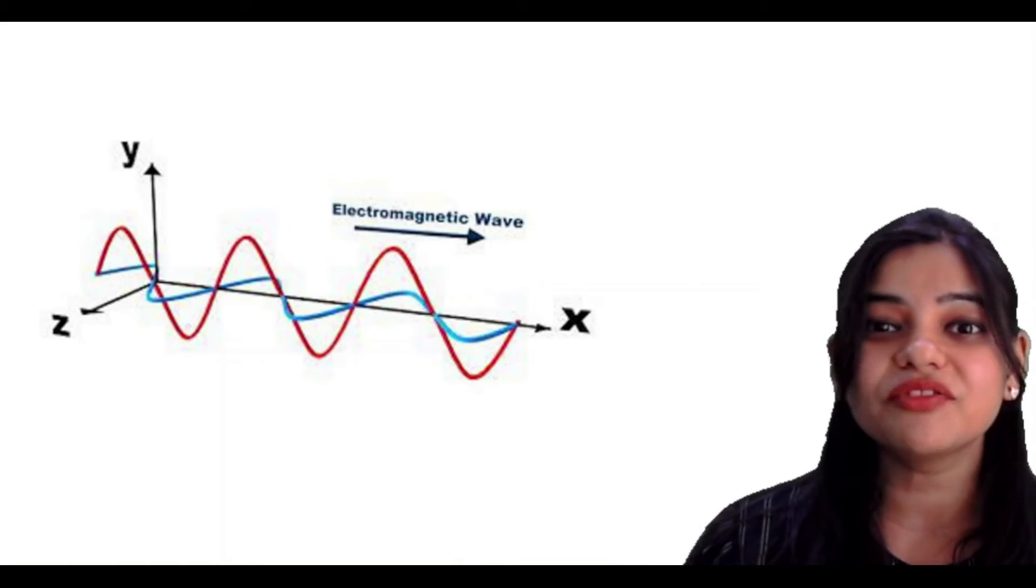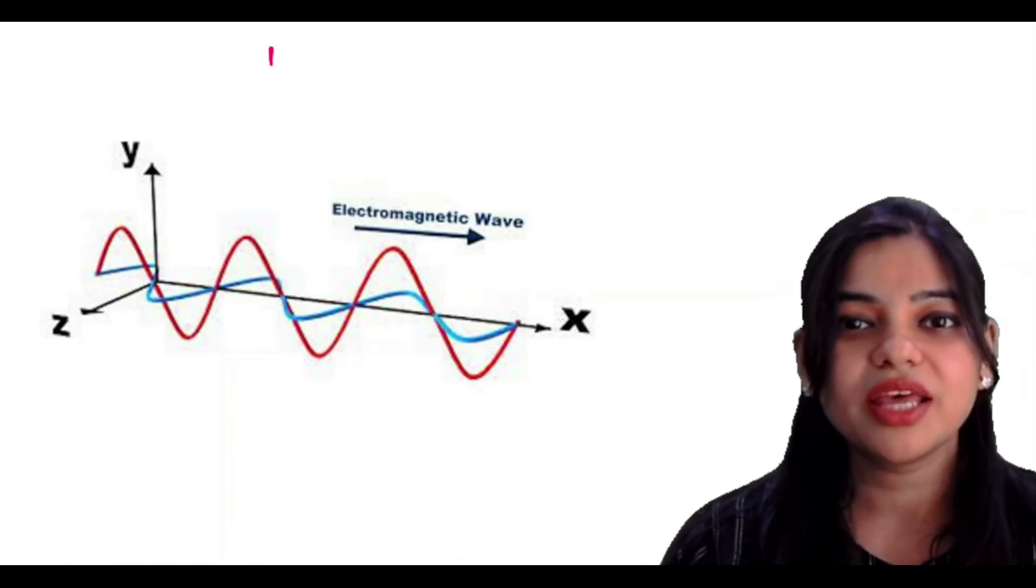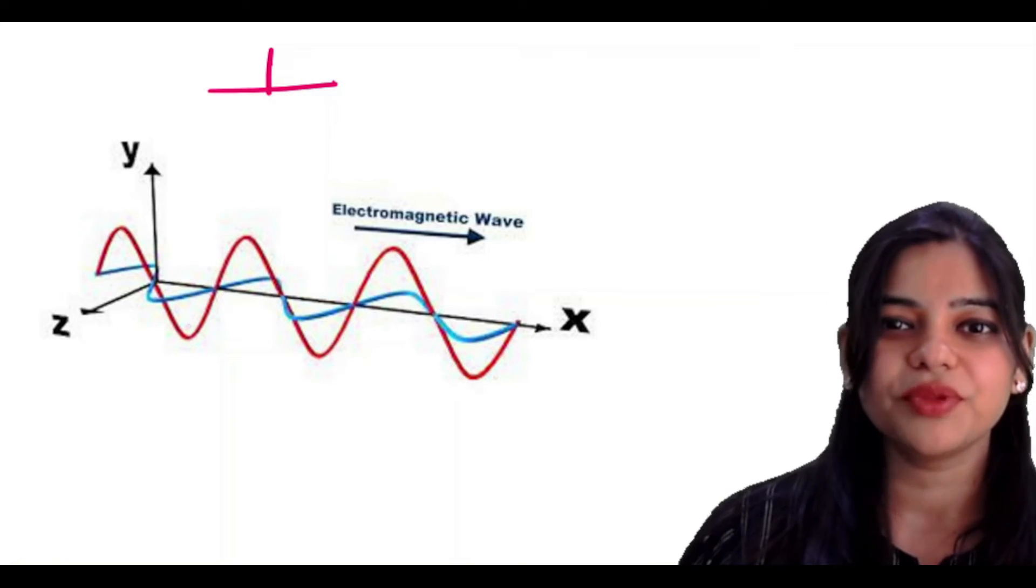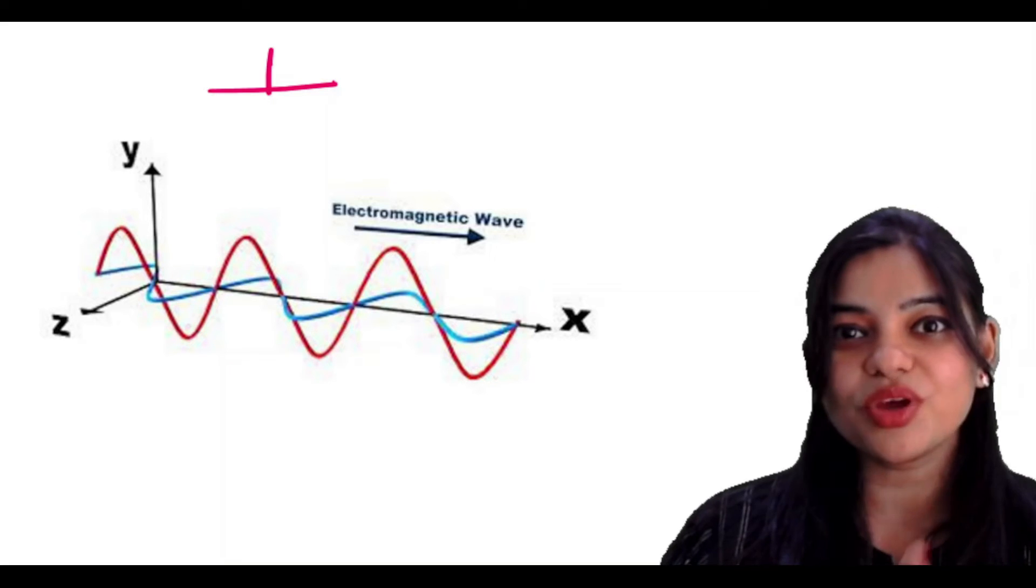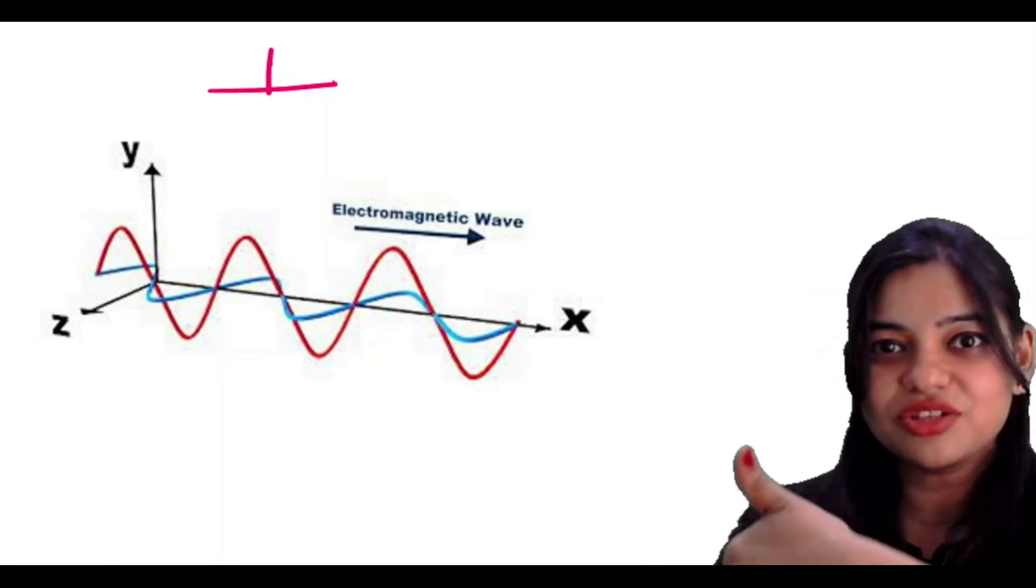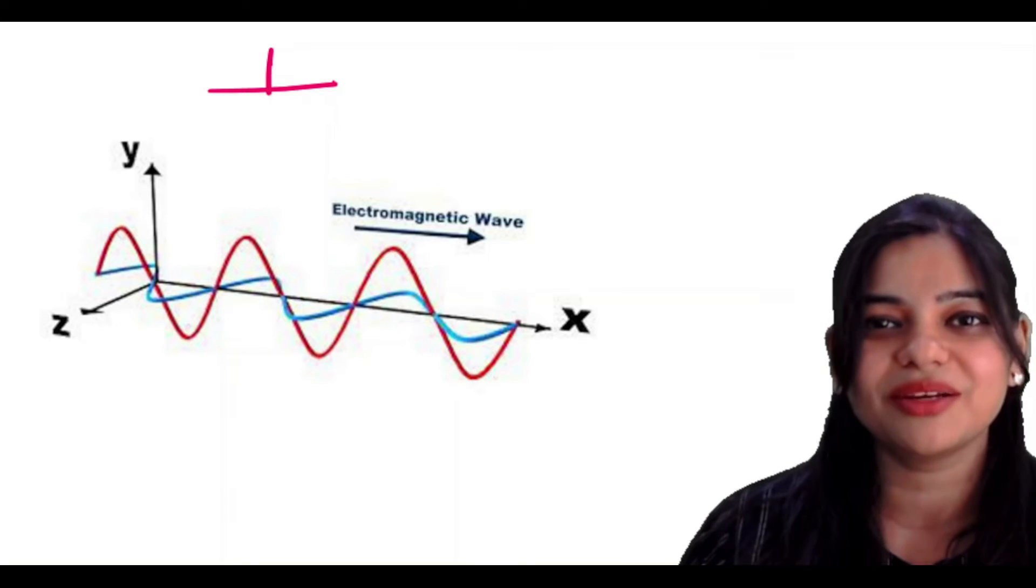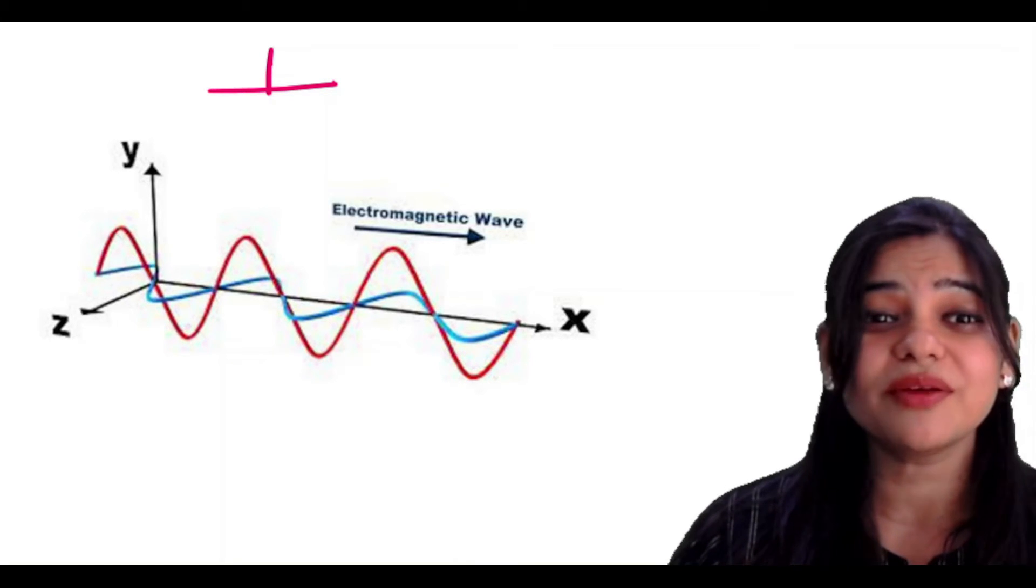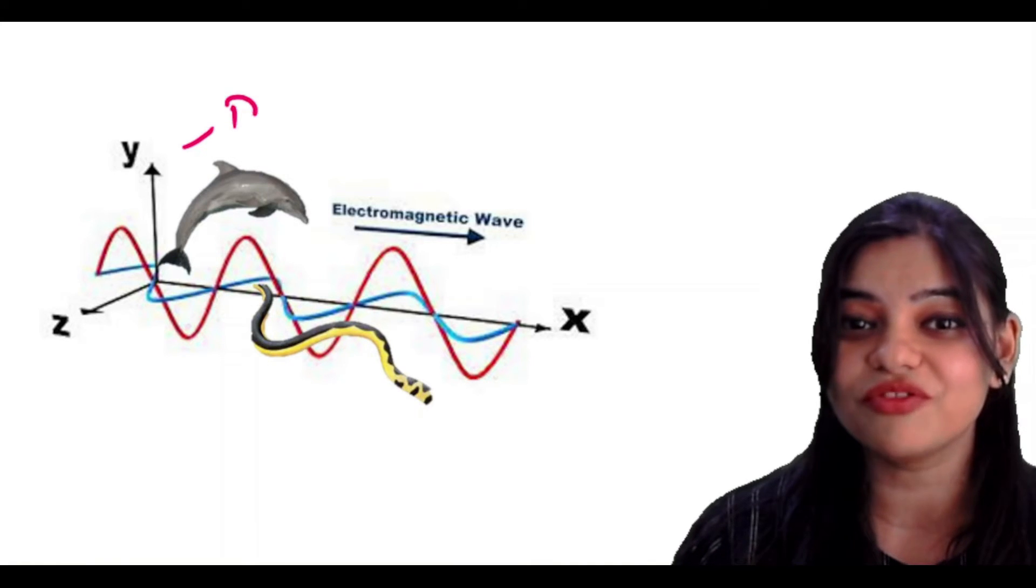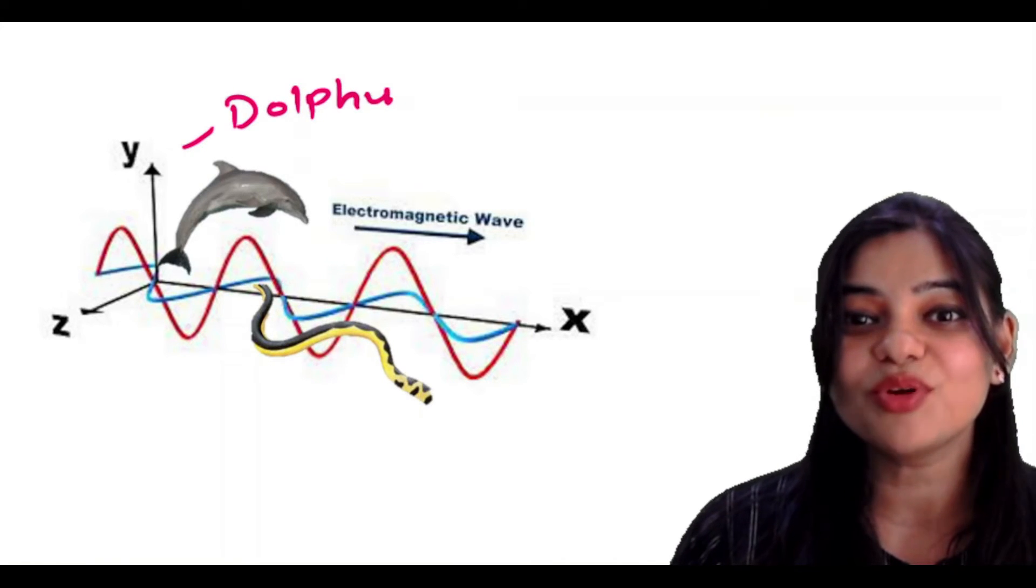Now electrical field and magnetic field are both perpendicular to each other. If you see, the red line is going from top to bottom, and the blue line is going this way, left to right. How is this motion? The motion is exactly similar to dolphin.